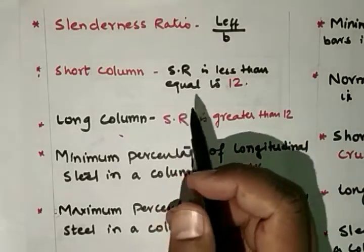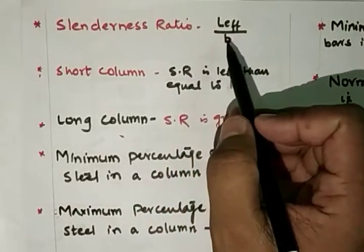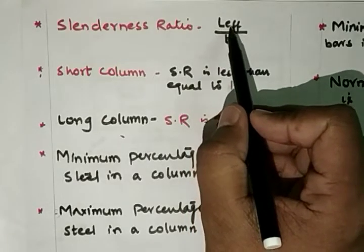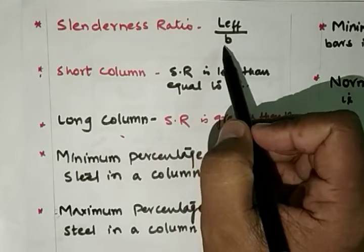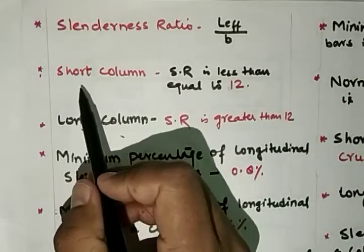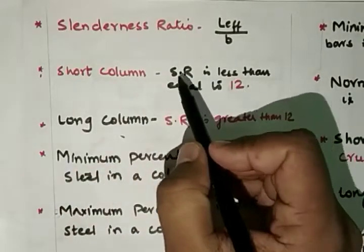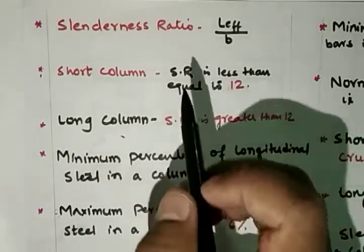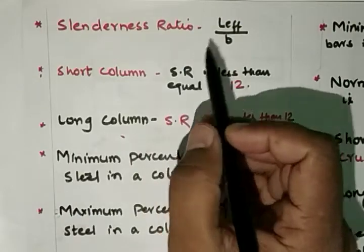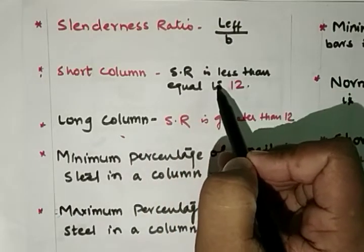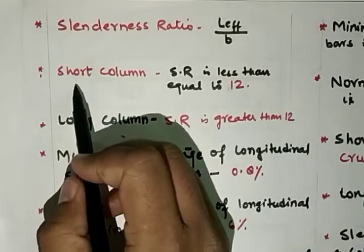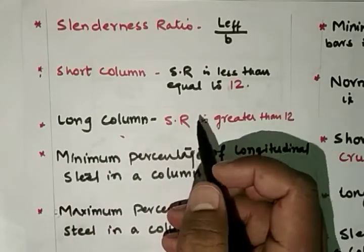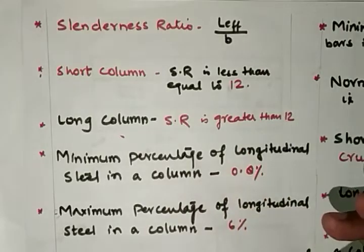Next is the slenderness ratio, which is the ratio of the effective length (L effective) upon the least lateral dimension (B). For a short column, the slenderness ratio is less than or equal to 12 — that is, L effective upon least lateral dimension is less than or equal to 12. For a long column, the slenderness ratio is greater than 12.